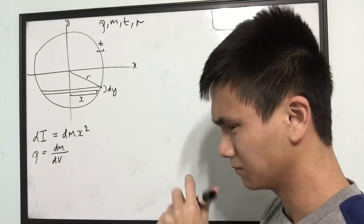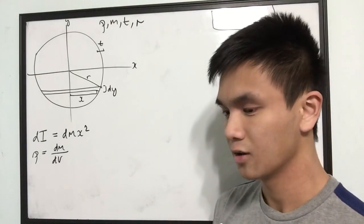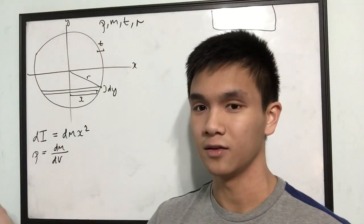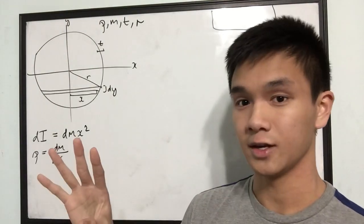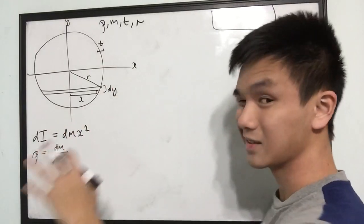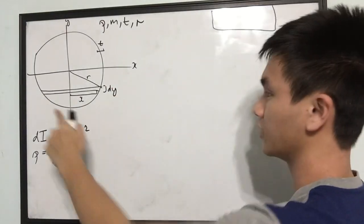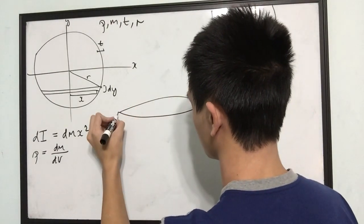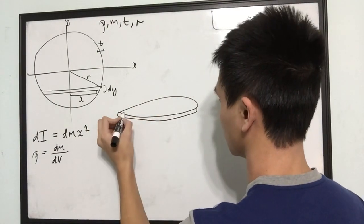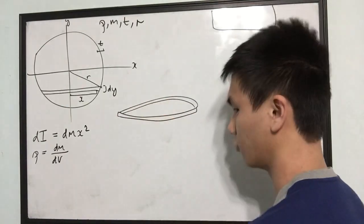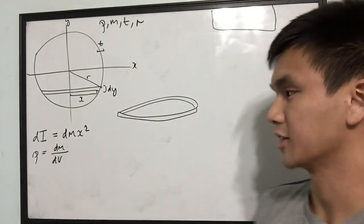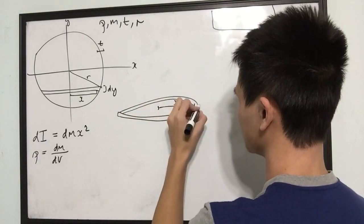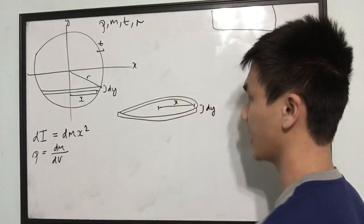But what is dV? Before I perform this multiplication, I'm going to tell you what dV is. This is a little bit hard to wrap your head around, but since we're breaking this up into hoops, it's going to look something like this — like a Funyun, or a roller coaster. This dimension is x and it has a height of dy.